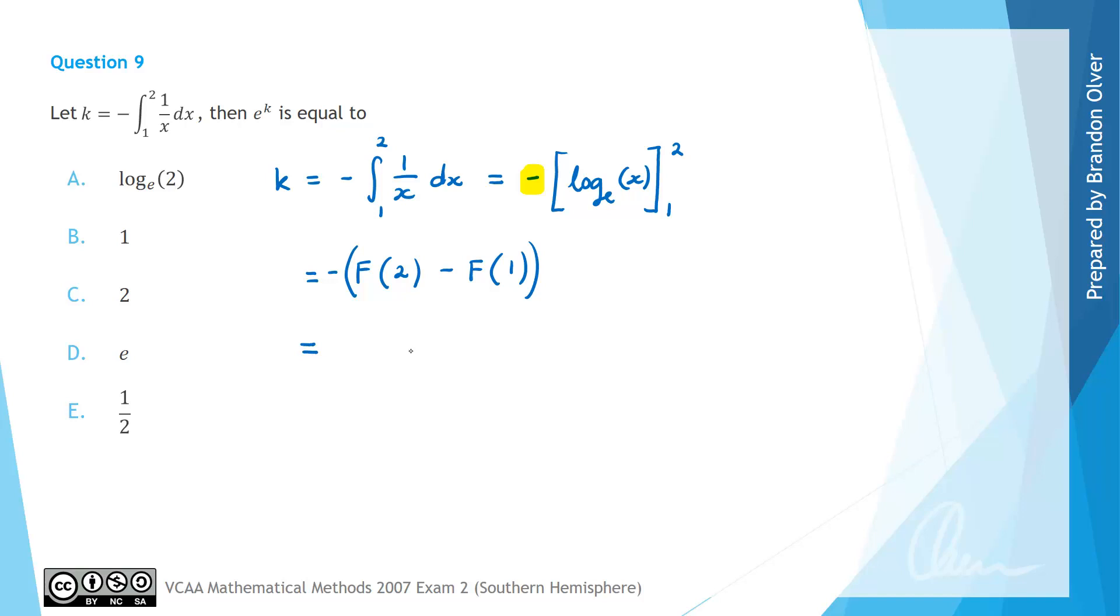And if you wanted to, you could then expand the negative through. So this would be the same as positive f of 1 subtract f of 2. And now f of 1 would simply be the anti-derivative log e of x with 1 substituted into it. So we'd have log e of 1, subtract, and then f of 2 would be log e of 2.